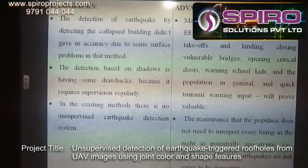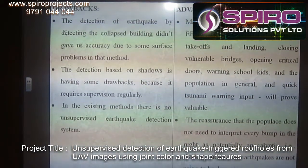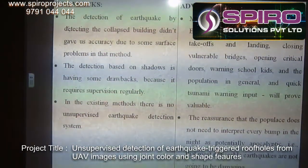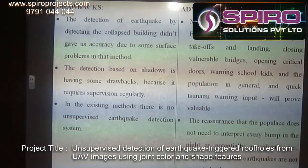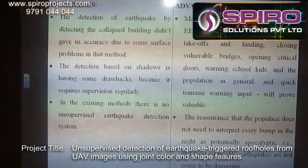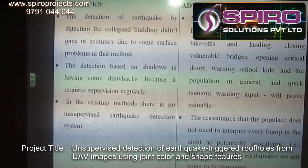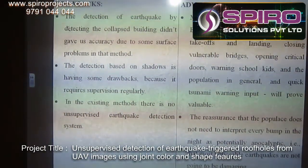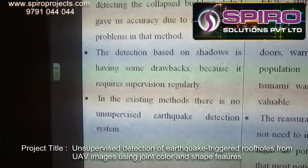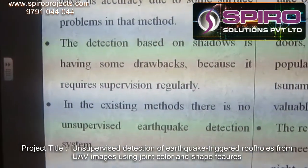The major drawbacks of the existing method are: the detection of earthquake by detecting collapsed buildings did not give accurate results due to some surface problems. The detection based on shadows has drawbacks because it requires supervision regularly. In the existing methods, there is no unsupervised earthquake detection system.